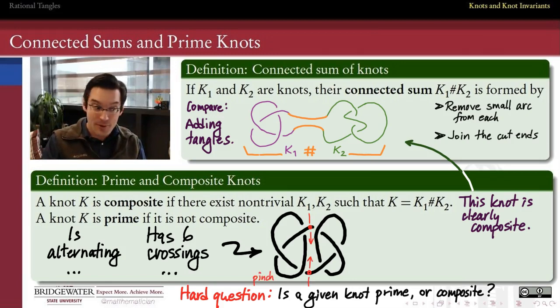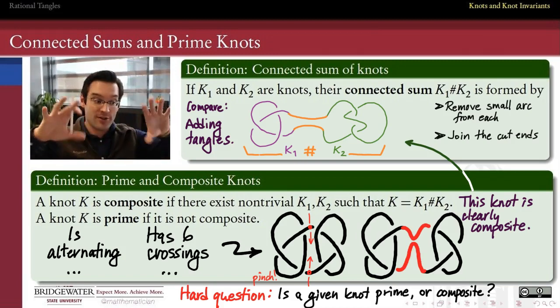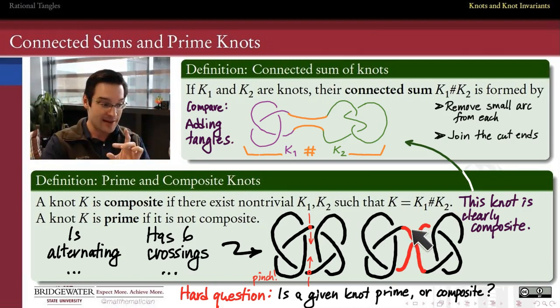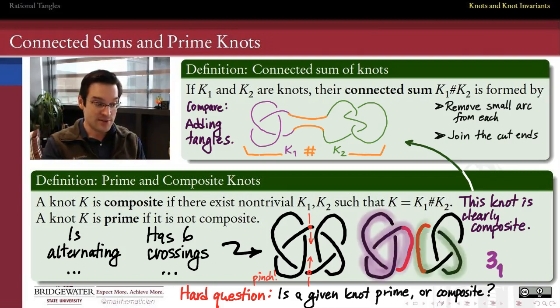And it turns out the answer to that is no, because if we take these two red spots right here, this spot on this strand, this spot on this strand, if we were to pinch those two together, in other words, kind of pull apart those two parts of the knot and then squeeze that top strand towards that bottom strand, now we're kind of buttering ourselves up to see this as a connected sum of two knots. All we would have to do is cut this part where we pinch it and form two separate knots.